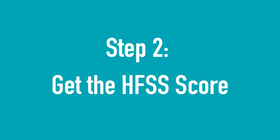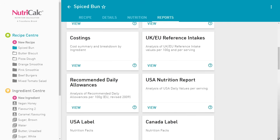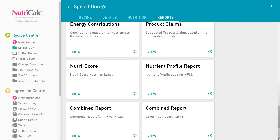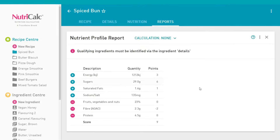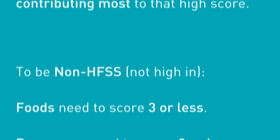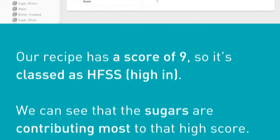Step 2: Get the HFSS score. Under the reports tab we go to the nutrient profile report used for HFSS scoring recipes. To be non-HFSS, foods need to score 3 or less and beverages score 0 or less. Scoring a 9, our recipe is classed as HFSS. The sugars are contributing most to that high score.